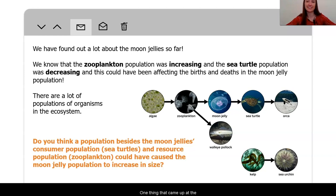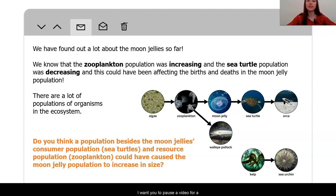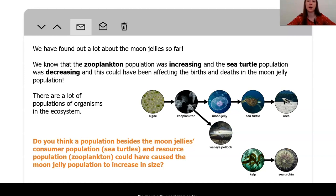One thing that came up at the end of our last lesson is many of you realized that there are many other populations in the ecosystem, and that is where we are going today. Even though we have figured out so much about the Moon Jelly populations, there are still more questions to answer. Many of you noticed there was the algae, the walleye pollock, the orca, kelp, and sea urchin in the ecosystem, and came up with this question: could they be affecting the Moon Jellies as well? I want you to pause the video for a moment and take another look at our food web. Do you think that a population besides the Moon Jelly's consumer, the sea turtles, or their resource population, the zooplankton, could have caused or contributed to an increase in the Moon Jelly population so far?